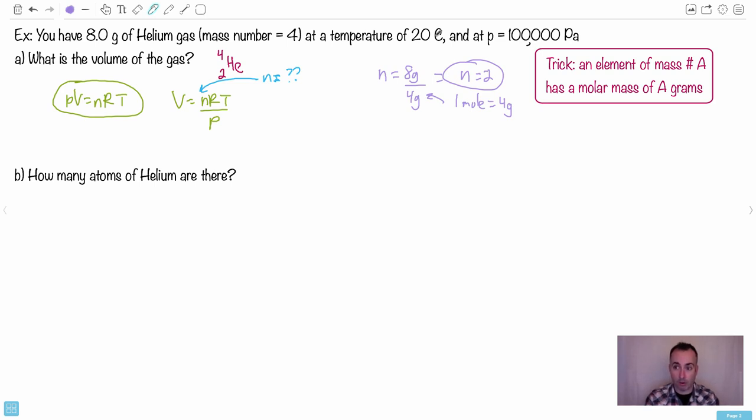That's the definition, right? A molar mass—that means a mass of one mole. So because helium has a mass number of four, it's got a molar mass of four grams. That means one mole is four grams. I've got eight grams of it. Eight is double four, so that's how I know I have two moles. I've got double the amount of the molar mass.